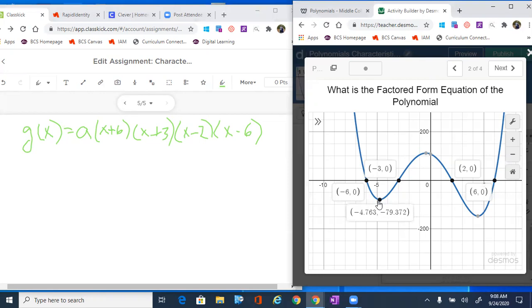I'm going to use that local minimum, negative 4.76, and this is going to be our x value with our y value of negative 79.32. Wherever I see an x, I've got to put that negative 4.76.